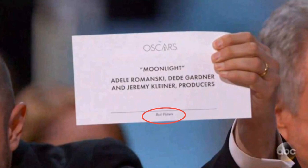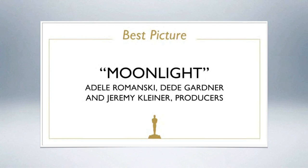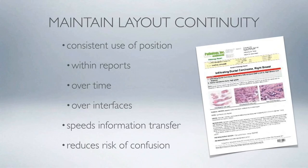The card said 'Emma Stone, La La Land' in matching font sizes, and the actual award — Best Actress — was tiny at the bottom. The correct card for Moonlight had Best Picture properly emphasized at the bottom. If the card had been redesigned with Best Actress as the largest font and Emma Stone second, the mistake would have been easily avoided. Use color and proper hierarchy and you'd know immediately which award was which.